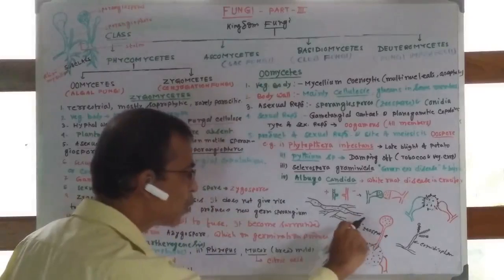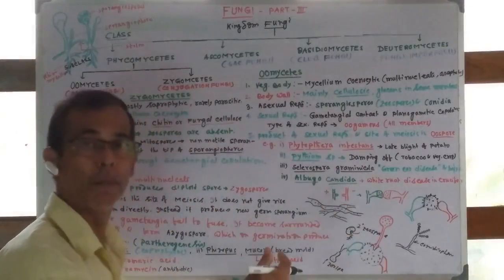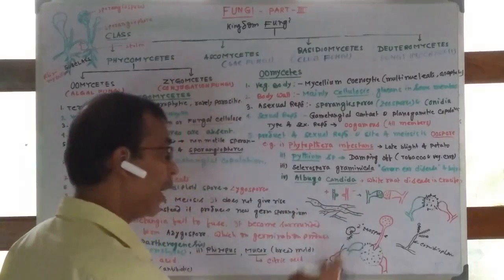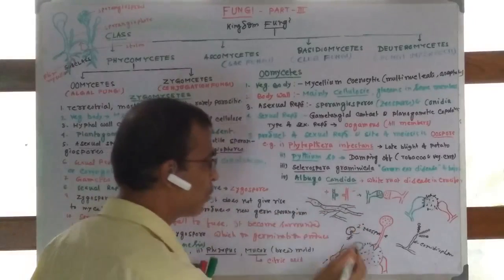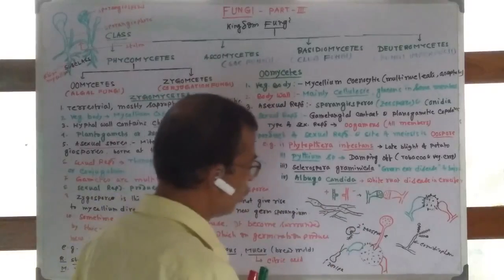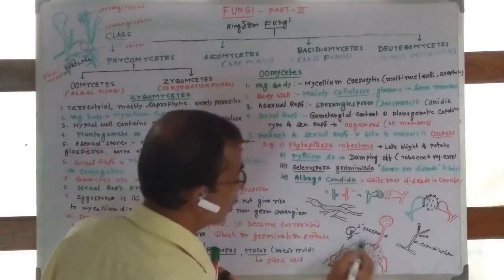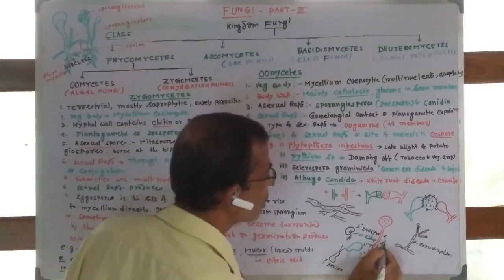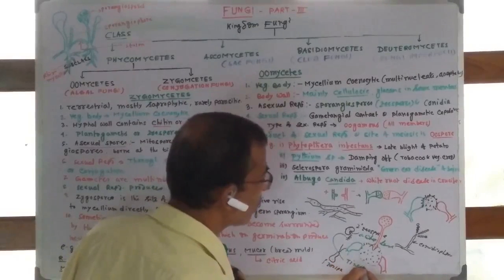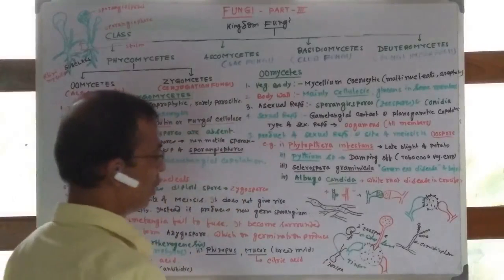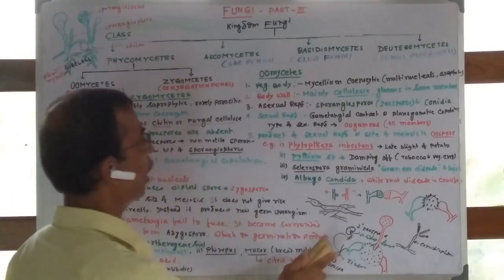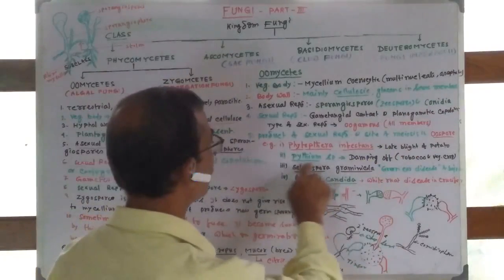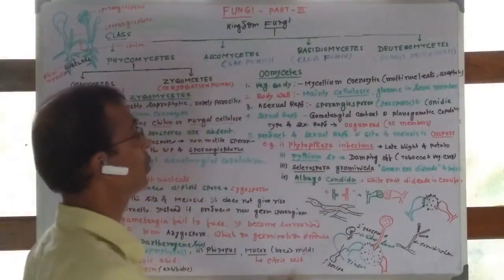Diplanetism is mainly found in Saprolegnia, while in Pythium it causes damping-off disease in tobacco and vegetable crops.